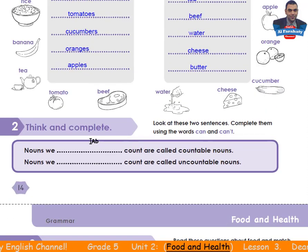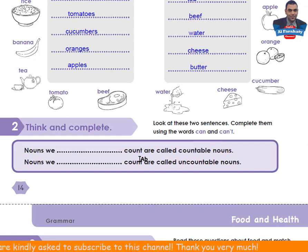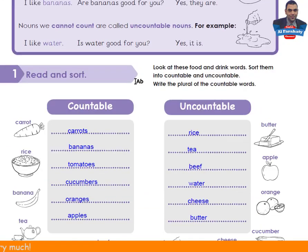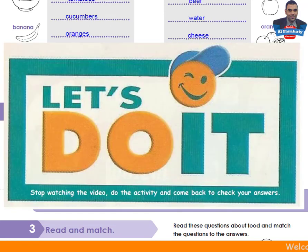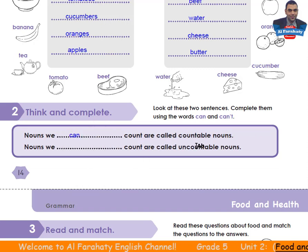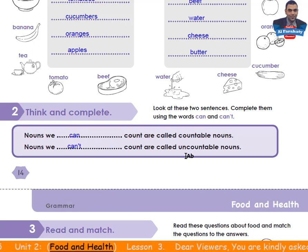Activity 2 — Think and complete. Look at these two sentences and complete them using the words 'can' and 'can't'. Nouns we CAN count are called countable nouns. Nouns we CAN'T count are called uncountable nouns. Take your time to complete them, then come back to check your answers. Nouns we can count are called countable nouns. Nouns we can't count are called uncountable nouns.